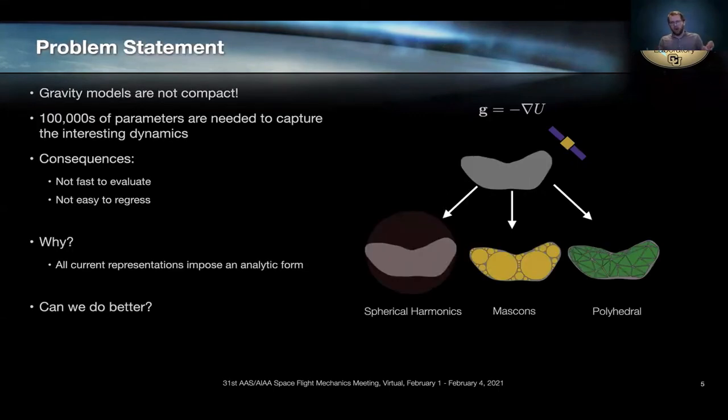So what is the problem? I argue that gravity models today are not inherently compact, and what I mean by that is you need hundreds of thousands of parameters or coefficients to capture the dynamics of any interesting features beyond J2. And as a consequence, these models are expensive to evaluate and challenging to fit in the first place.